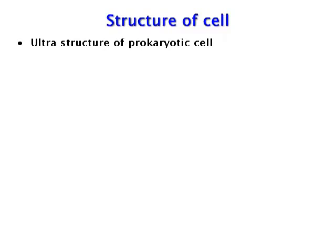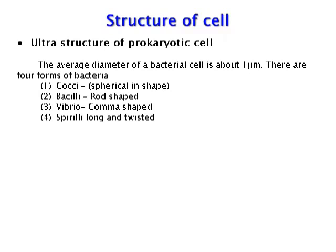Ultrastructure of prokaryotic cell: The average diameter of a bacterial cell is about 1 micrometer. There are four types of bacteria: Cocci, which are spherical in shape; Bacilli, which are rod-shaped; Vibrio, which are comma-shaped; and Spirilli, which are long and twisted.